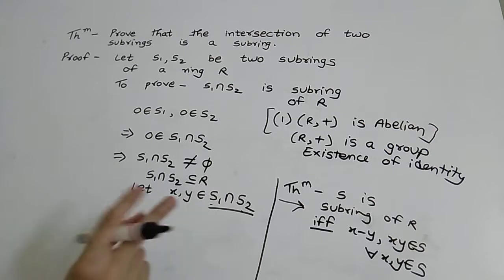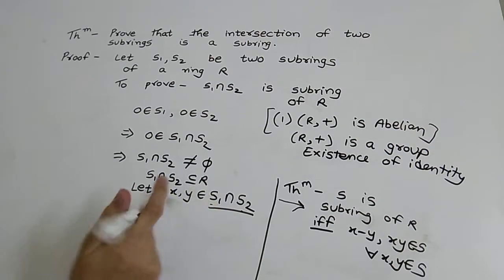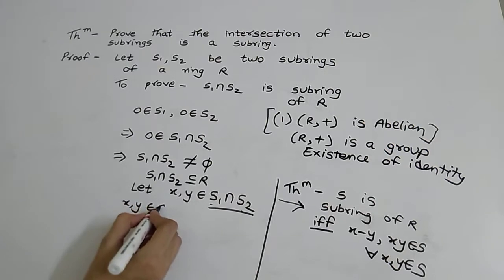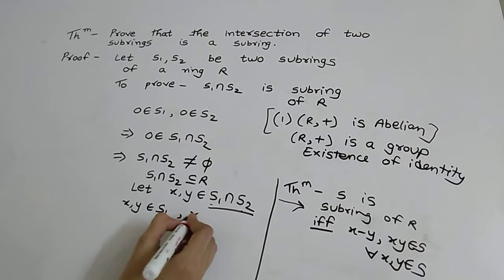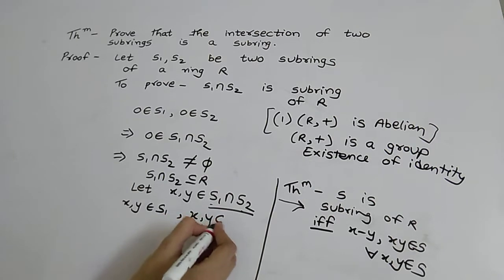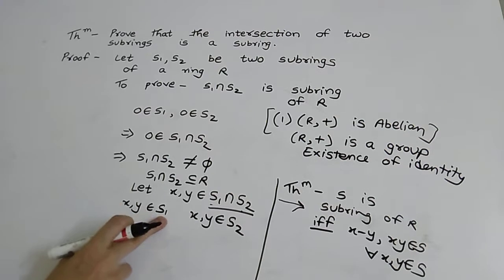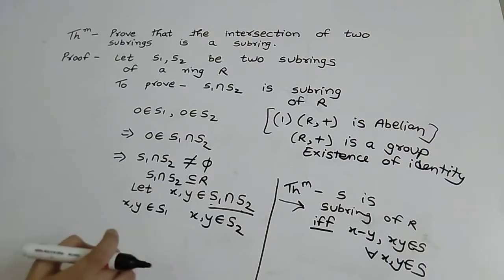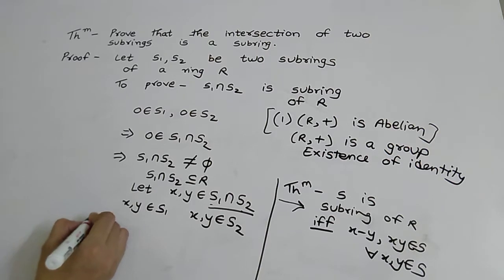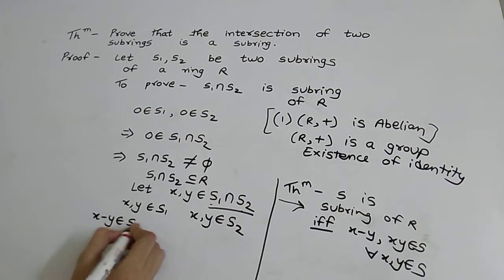So let x, y be two elements of S1 intersection S2. This means x, y belongs to S1 as well as S2. But S1 and S2 are themselves subrings of R, so x minus y belongs to S1 and x into y belongs to S1.